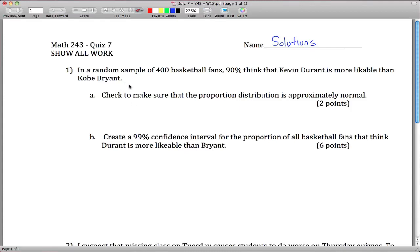Here are solutions for quiz 7 for 243. We've got a random sample of 400 basketball fans. 400 is important, that's n. In this random sample, 90%, so the proportion in my sample, in other words p-hat, is 0.9.